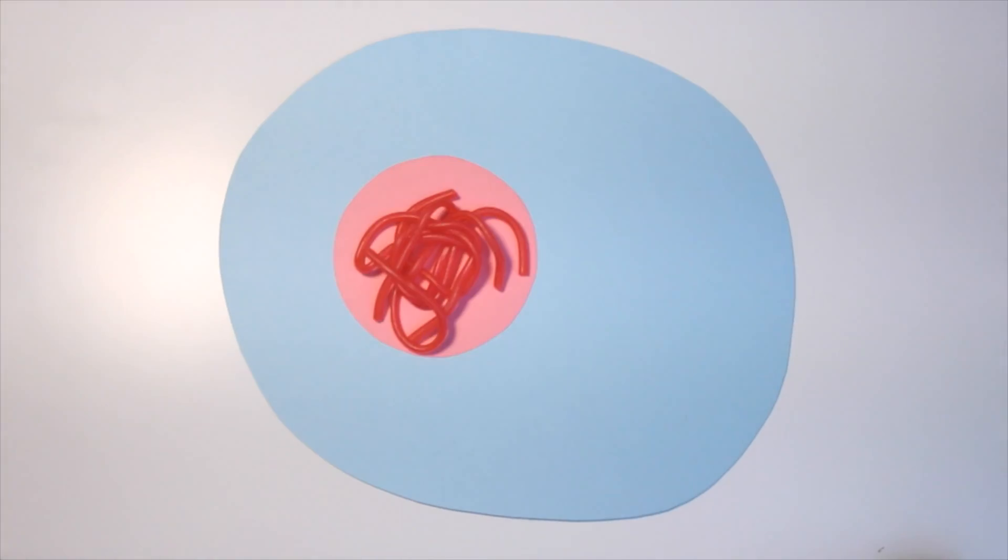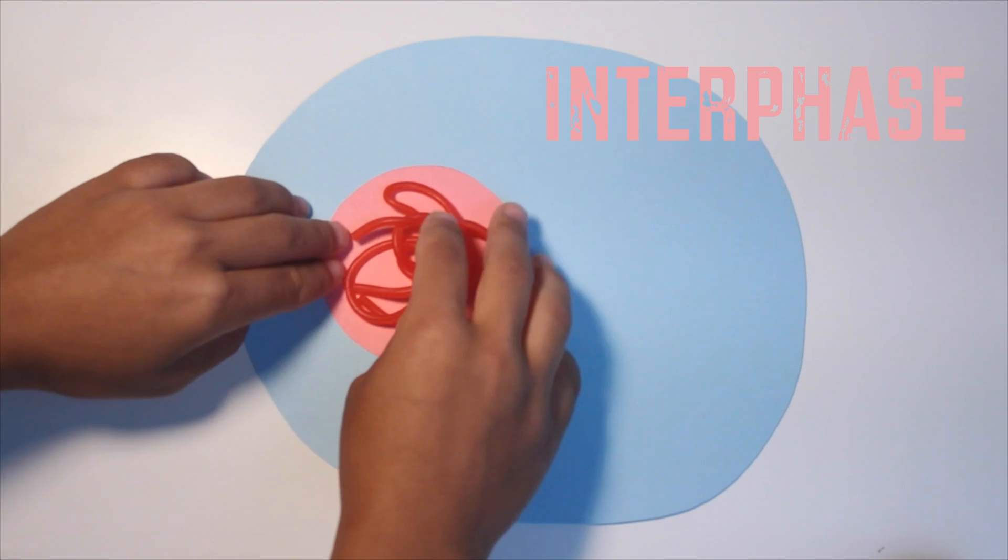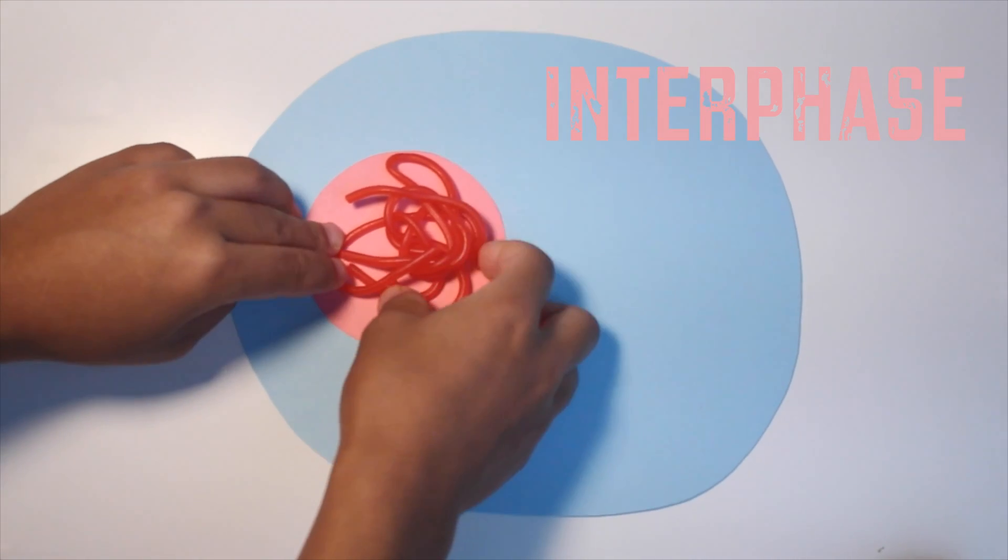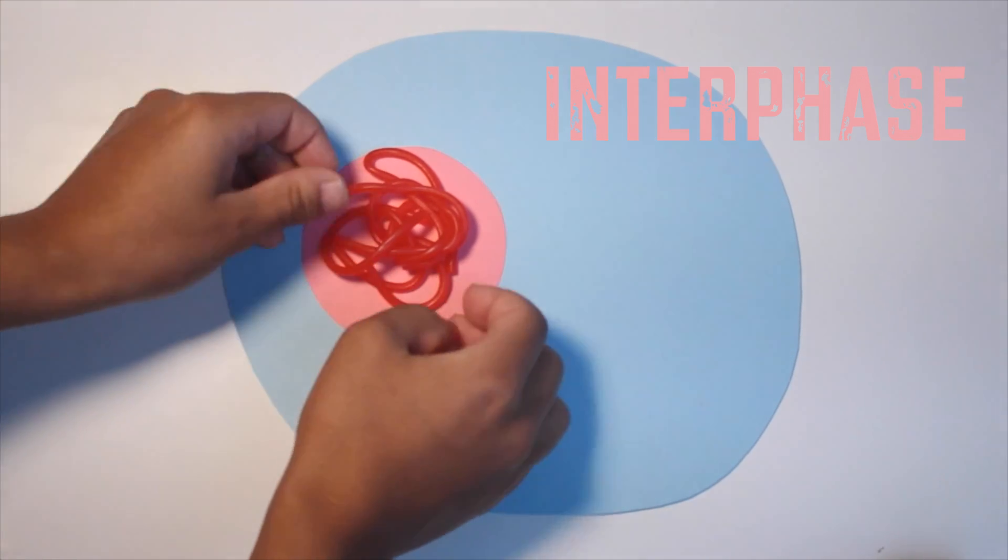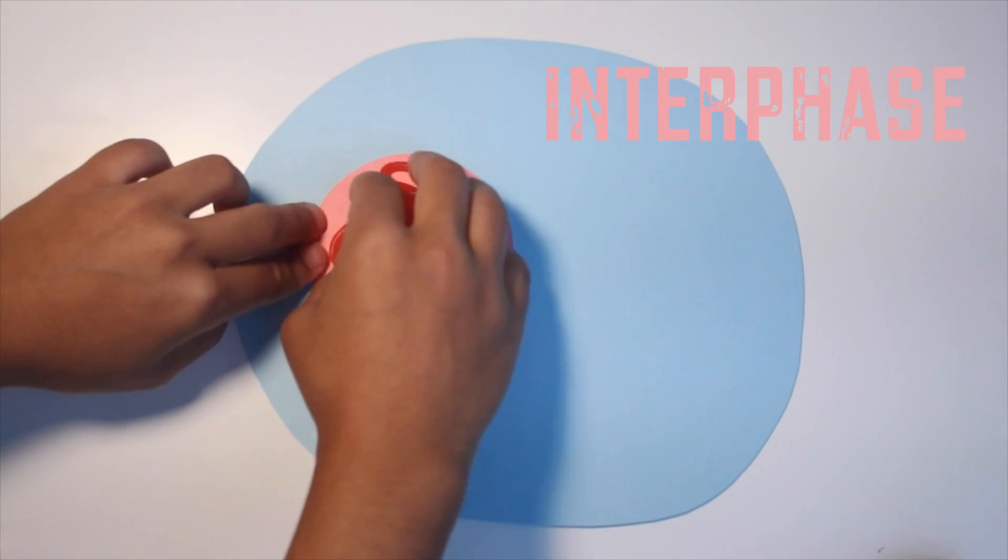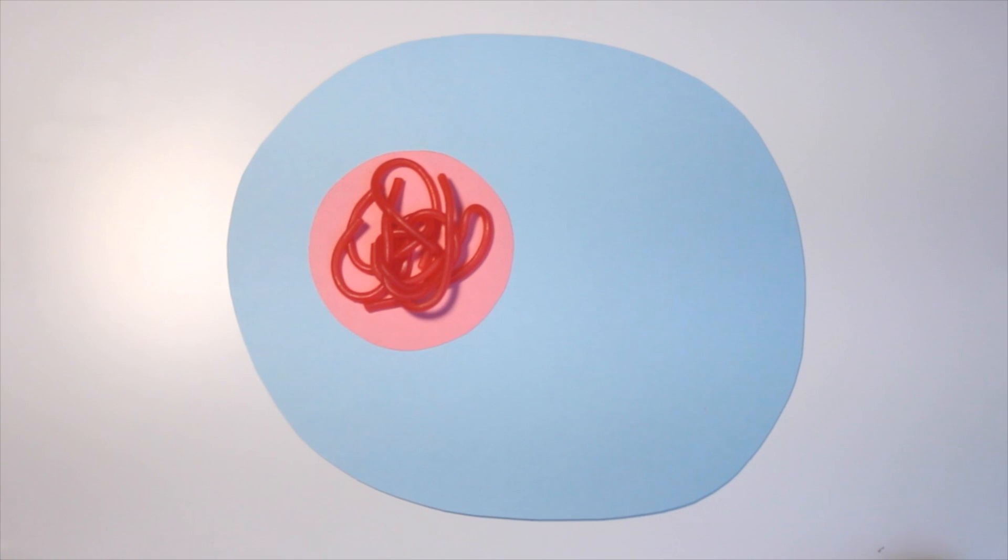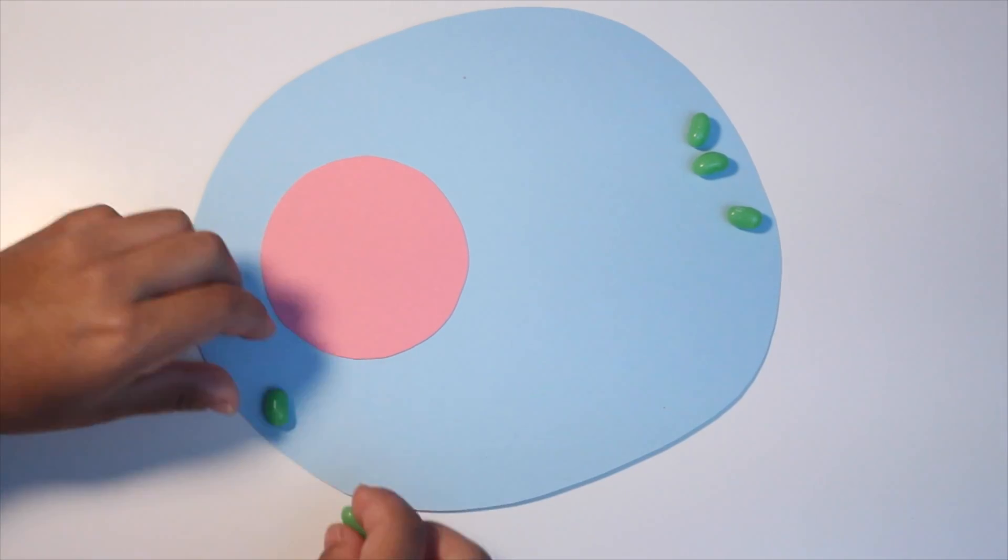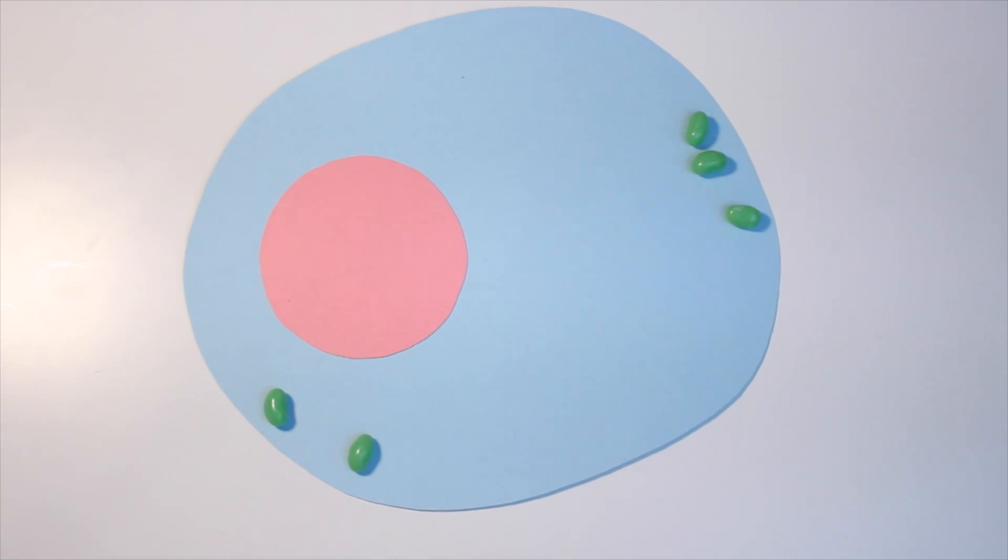Okay, so the first phase of mitosis is called interphase, and that's appropriately named because it is the phase where they're in between mitosis. Like inter, in between episodes of mitosis. So during interphase, all a cell does really is do its normal stuff, you know, minding its own business, doing its job.